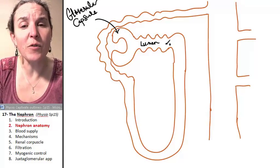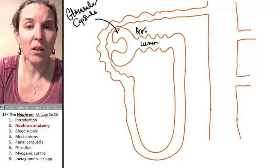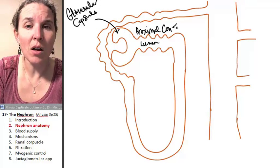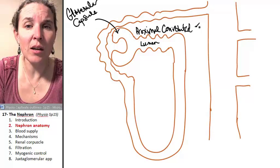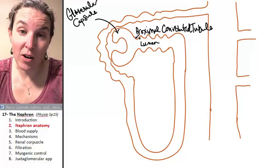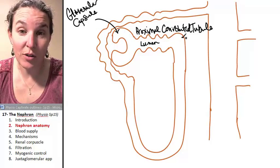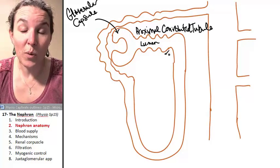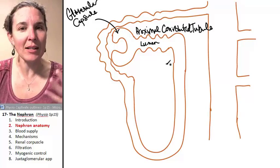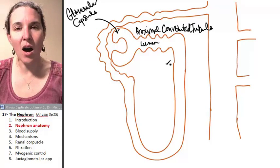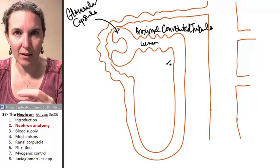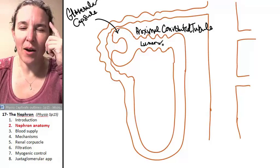Once the filtrate is in the glomerular capsule, or Bowman's capsule, it's going to flow into a structure called the proximal convoluted tubule. When I draw nephrons, I draw my proximal convoluted tubule with little wiggly squigglies to remind me that it's super convoluted. It's like a knot of tubing and that way I remember.